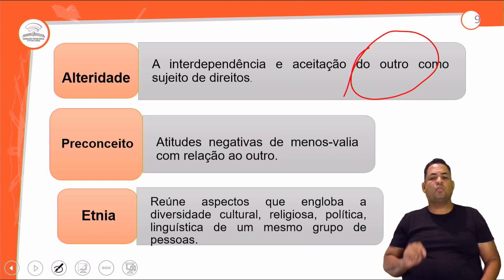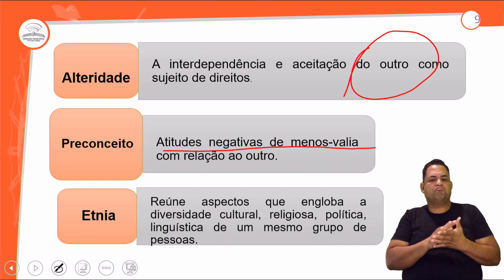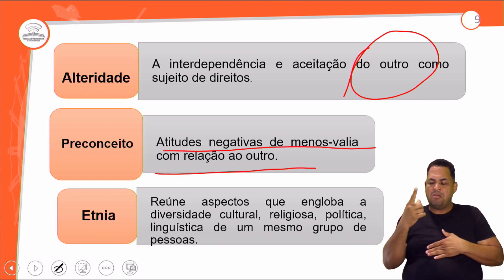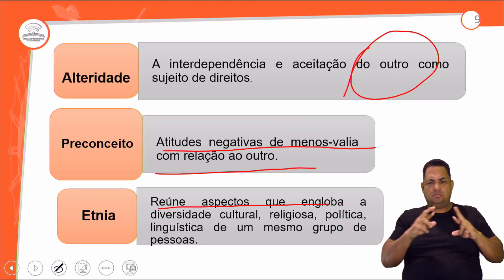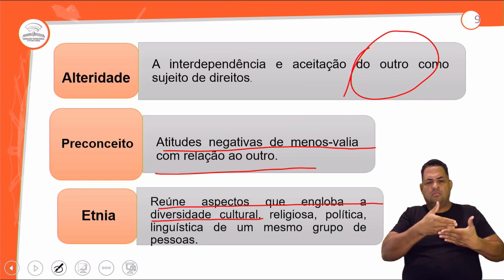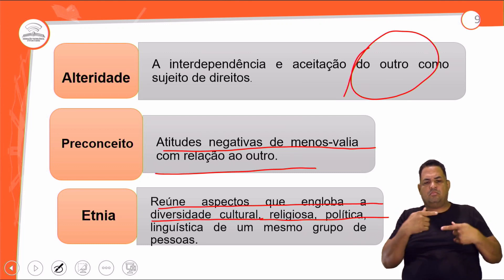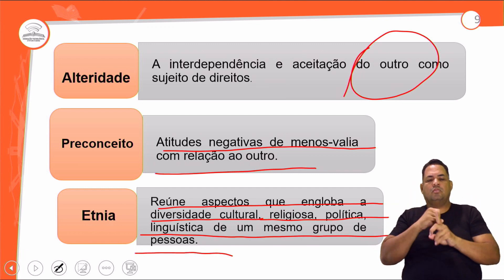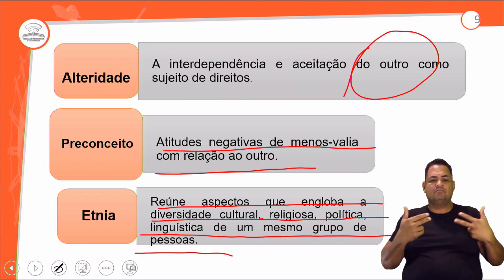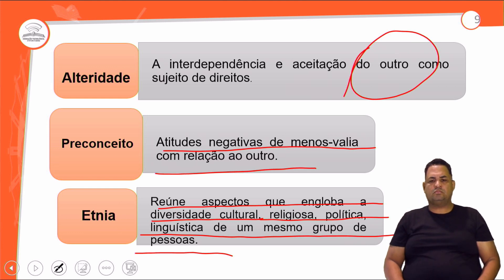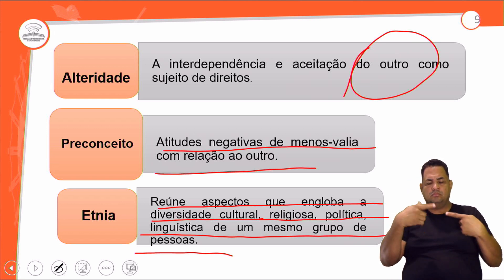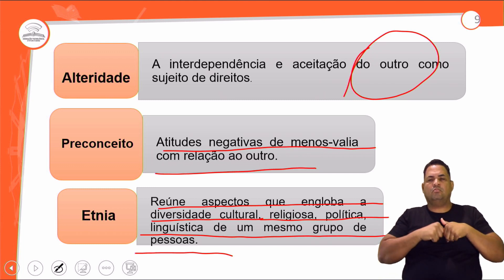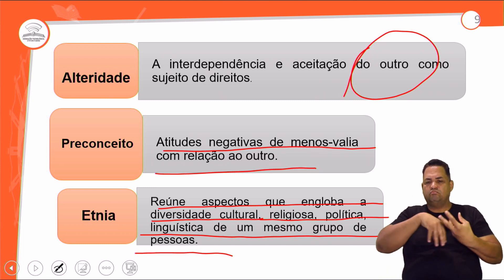Preconceito são atitudes negativas de menos-valia com relação ao outro. Etnia reúne aspectos que englobam a diversidade cultural, religiosa, política e linguística de um mesmo grupo de pessoas. O conceito de etnia engloba todos esses aspectos.